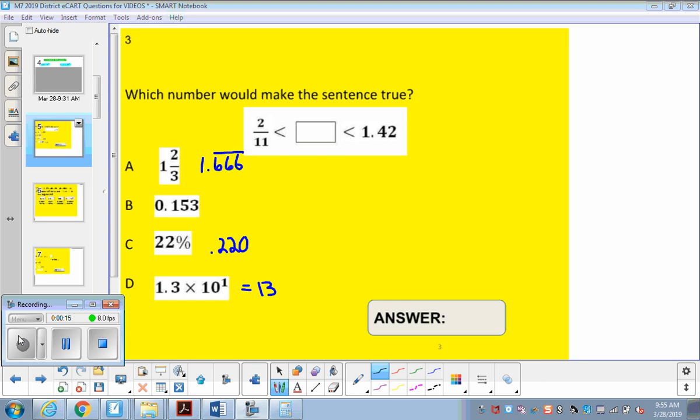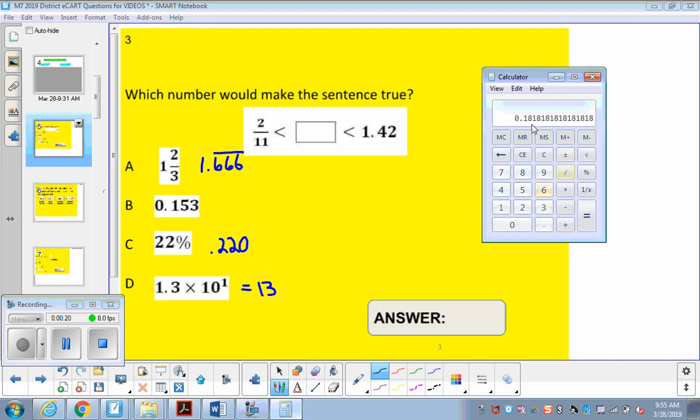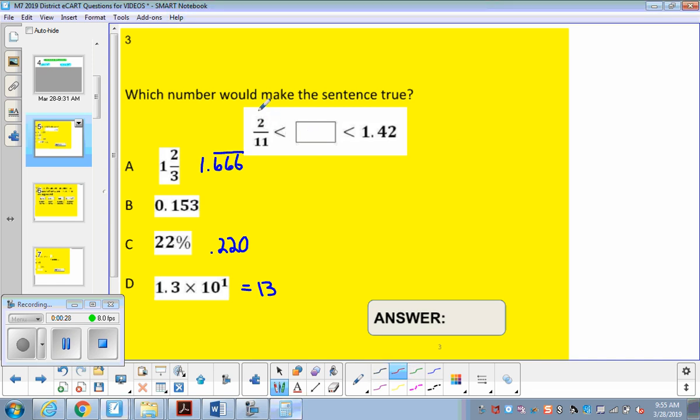For question 3, we want to know which number would make the sentence true, and we have a fraction and a decimal. For the fraction, in the calculator, if you take 2 and divide it by 11, this is what we're going to get. So 2 divided by 11 is 0.18. We're looking for something that's going to be bigger than 0.18 but smaller than 1.42, so in between.